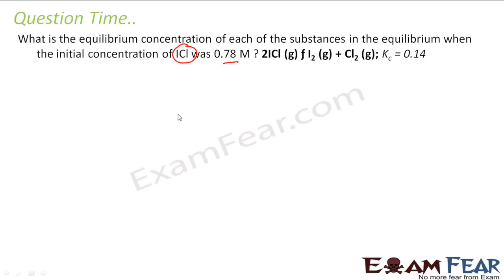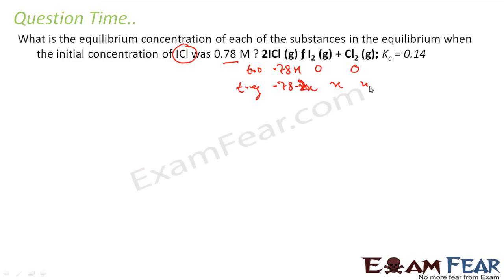So we have to find the equilibrium concentration for each species. At T equals 0, ICl was 0.78 M, I₂ was 0, and Cl₂ was 0. At T equals equilibrium, let's assume ICl becomes 0.78 minus 2x (because it is 2ICl), I₂ becomes x, and Cl₂ becomes x. My Kc will be: concentration of iodine times concentration of chlorine divided by concentration of ICl to the power 2.